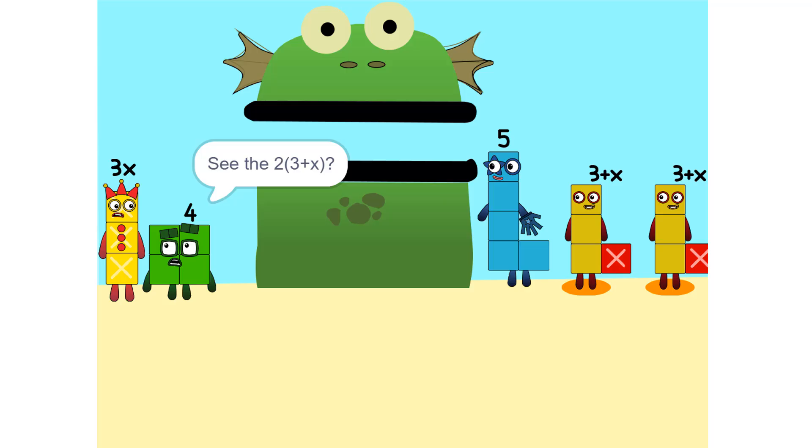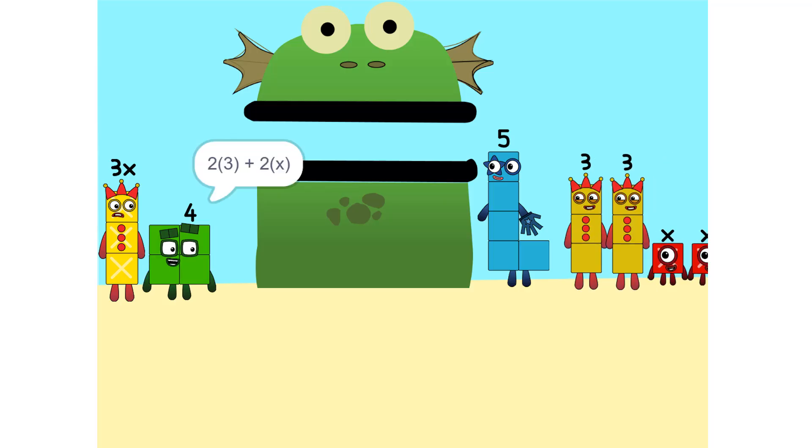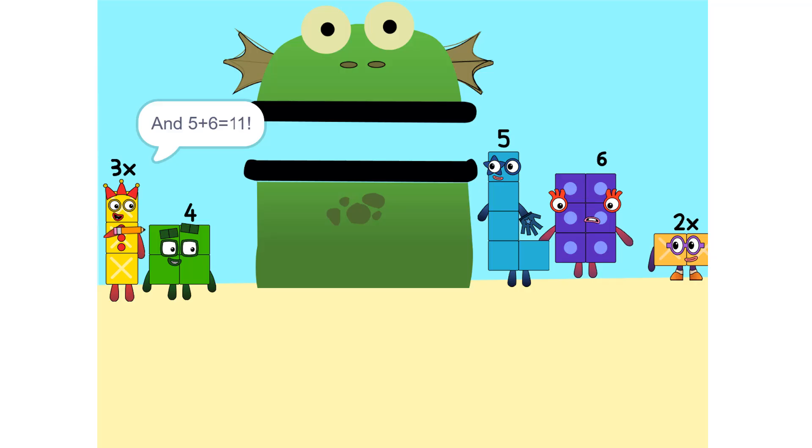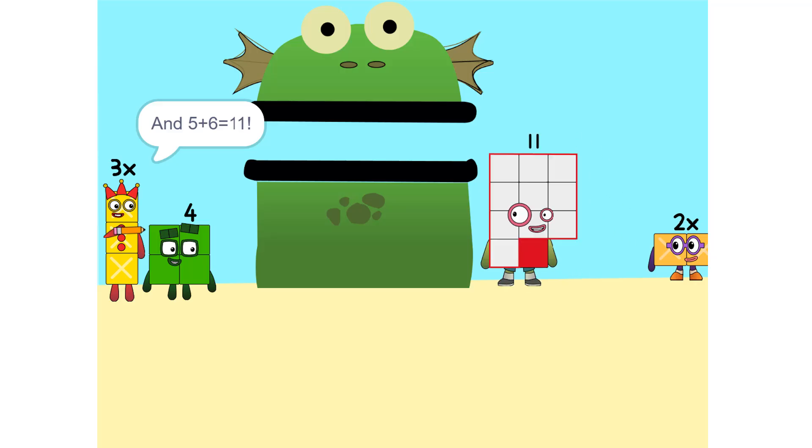Okay. See the 2 times 3 plus x? That's the same as 2 times 3 plus 2 times x. Which is 6 plus 2x. Oh. And 5 plus 6 is 11. Yeah.